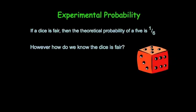In this video we're going to look at experimental probability. So if a dice is fair, then the theoretical probability of a 5 is 1 out of 6. In other words, if there's 6 faces and there's 1 five, the probability of a 5 would be 1/6.